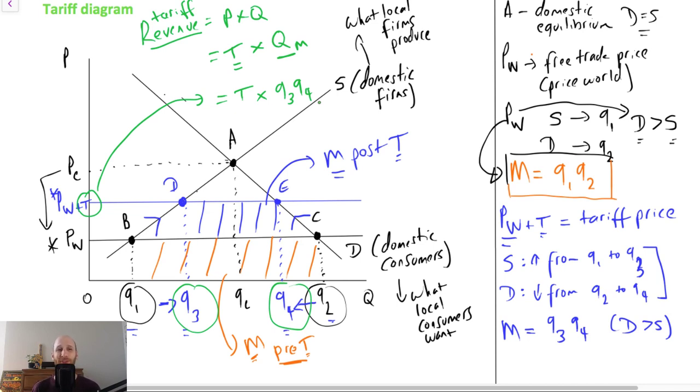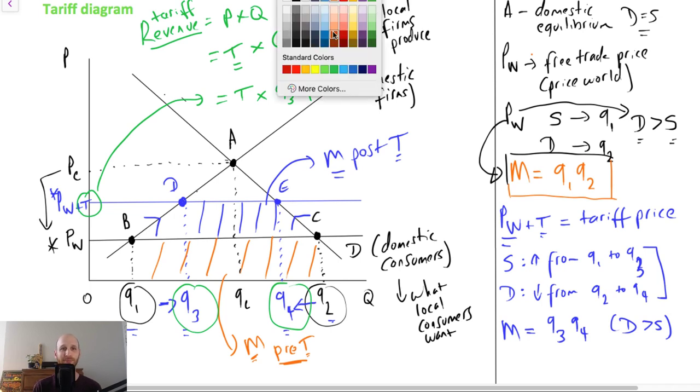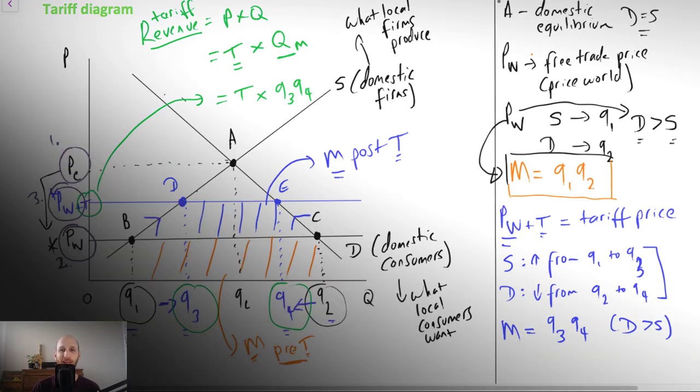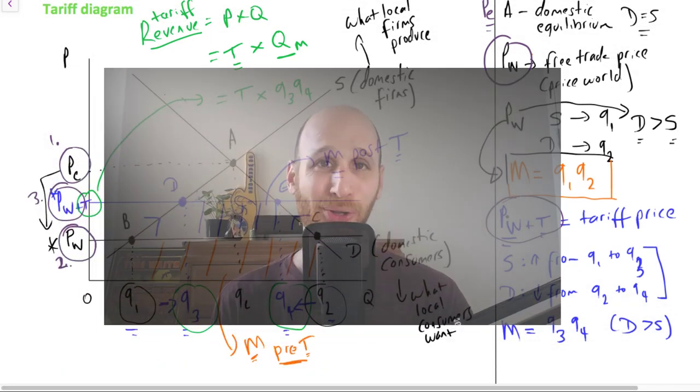If you've got numbers, you'll be able to calculate that. So the important things to work out are we start with price equilibrium, and then we have the world price, and then the government decides to put the tariff on. So here we go, we're looking at Pe, price world, price world plus tariff. And all of these complicated bits make up the tariff diagram.